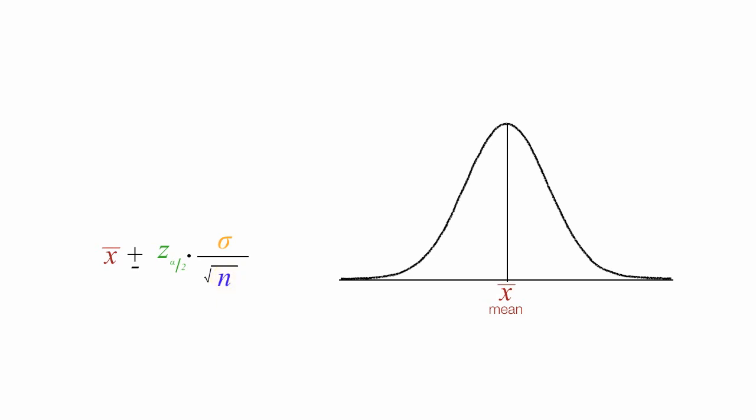The first variable, x bar, means the mean, and it fits right in the middle of the bell curve.